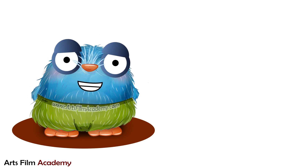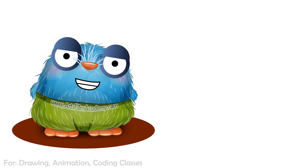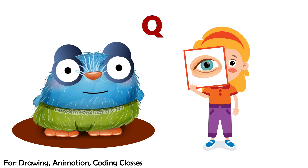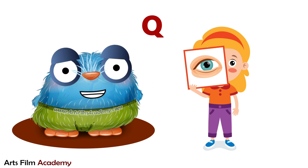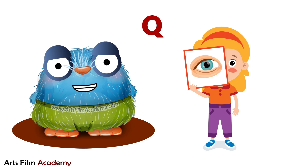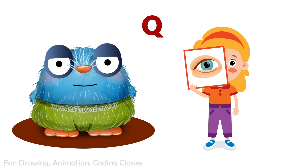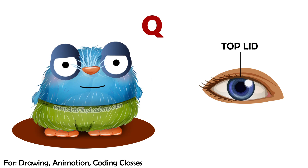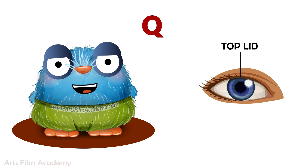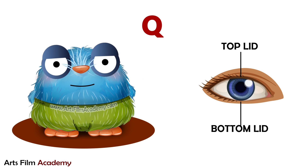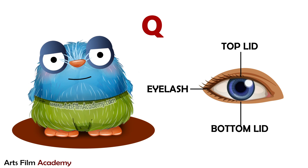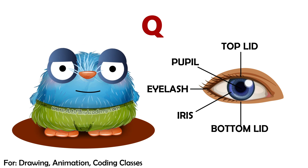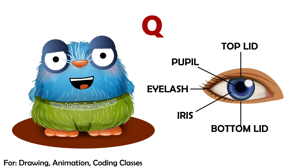Now it's question time. Can you tell me about eyes? Eyes help us to see our surroundings. And its parts are top lid, bottom lid, eyelashes, pupil and iris.